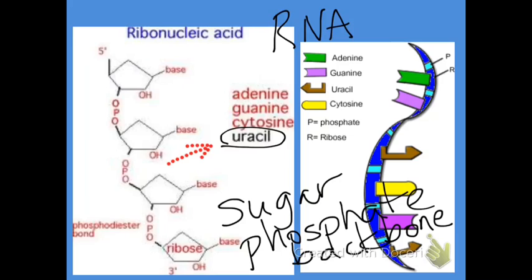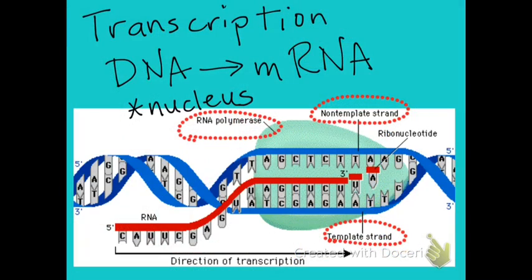This diagram shows transcription. Transcription is the process of making RNA from DNA, and it occurs in the nucleus in eukaryotes. Notice the template strand and the non-template strand, and RNA polymerase, which has two jobs: first, it opens up the DNA double helix, and second, it brings in new nucleotides to build the RNA molecule. RNA is single-stranded while DNA is double-stranded.